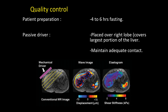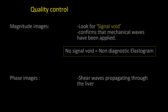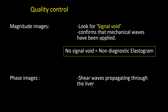To obtain a good quality elastogram, the elastography should ideally be performed after 4–6 hours of fasting. In the immediate postprandial period, blood flow via the portal vein to the liver increases, which can give a false high stiffness value. That is why fasting is ideal. The passive driver should be attached tightly over the abdomen and along the right side so the largest portion of the liver can be covered. We should also look out for something called a signal void — a distortion in the image at the point where the mechanical waves are applied to the patient's body.